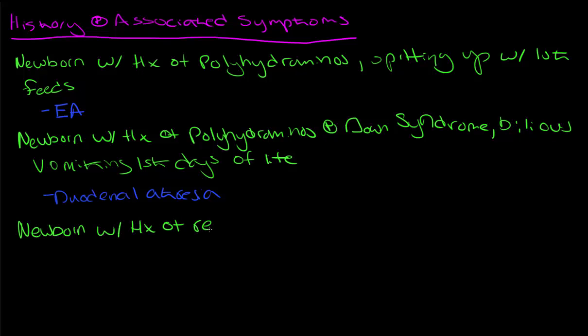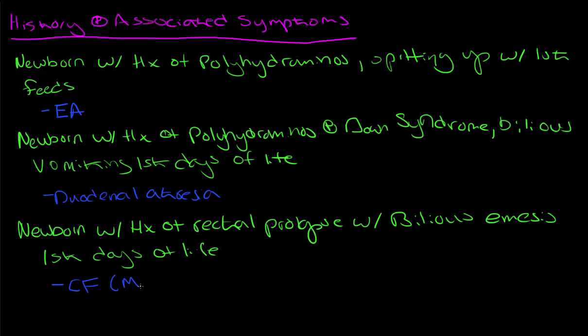Now a newborn with a history of rectal prolapse, which is an immediate red flag for cystic fibrosis, more related to the kind of bulky stools, and with the bilious emesis during the first day's life is the cystic fibrosis, that meconium ileus.